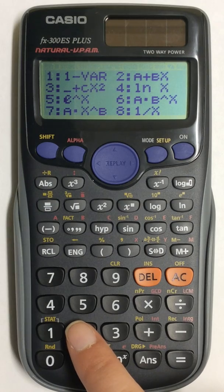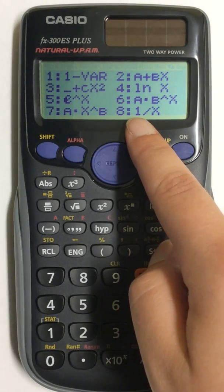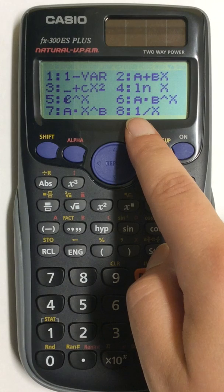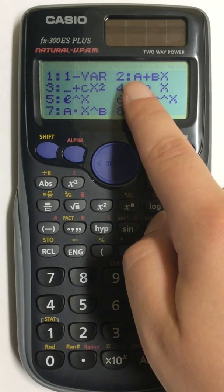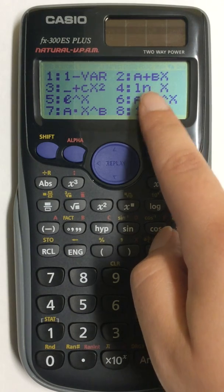and then this next screen comes up. In order to plug in values for two variable statistics, I have to press number 2, A plus BX. That's the option that I need.